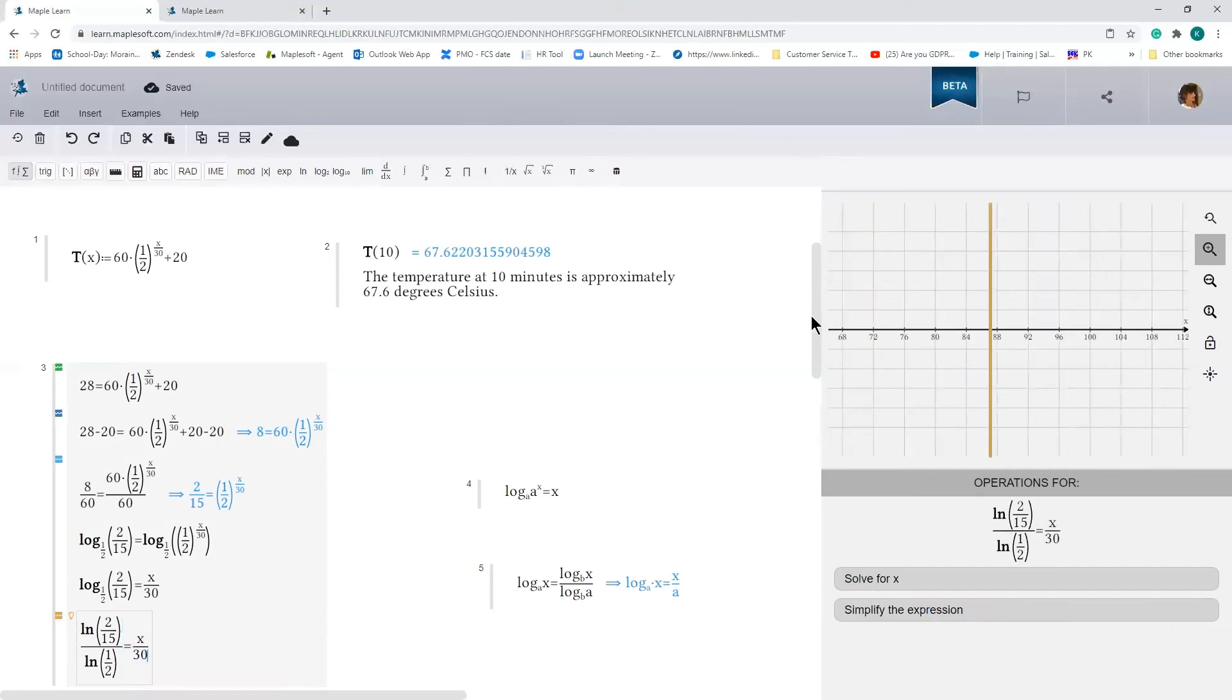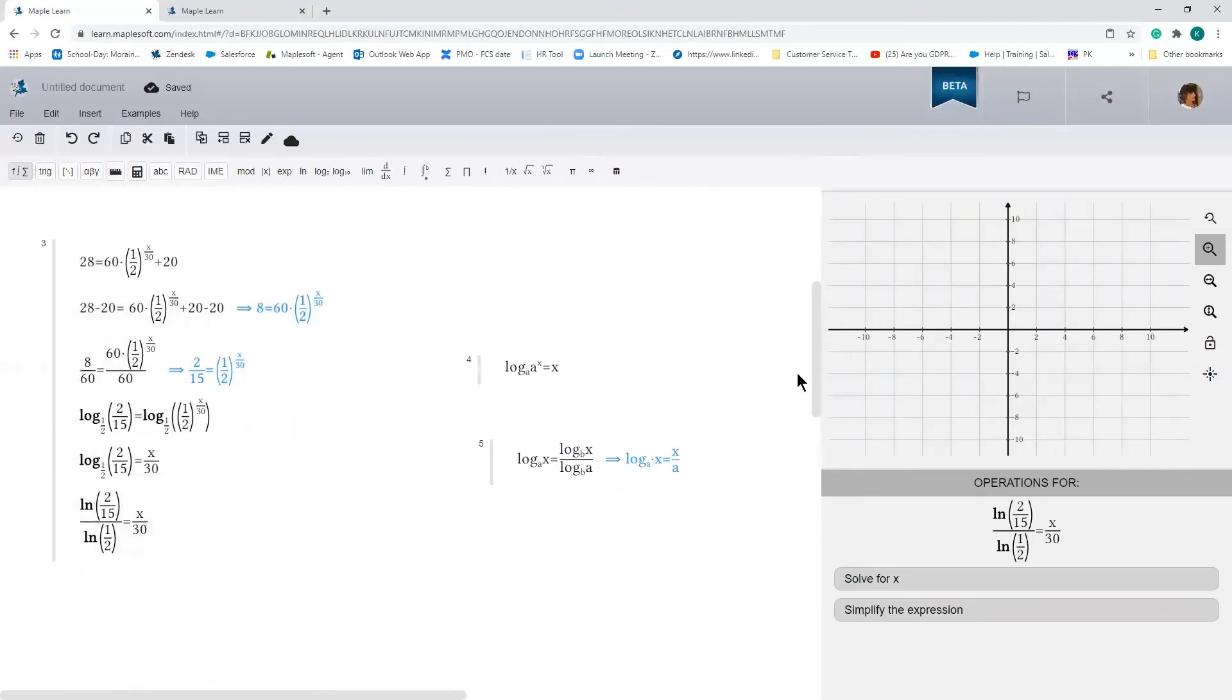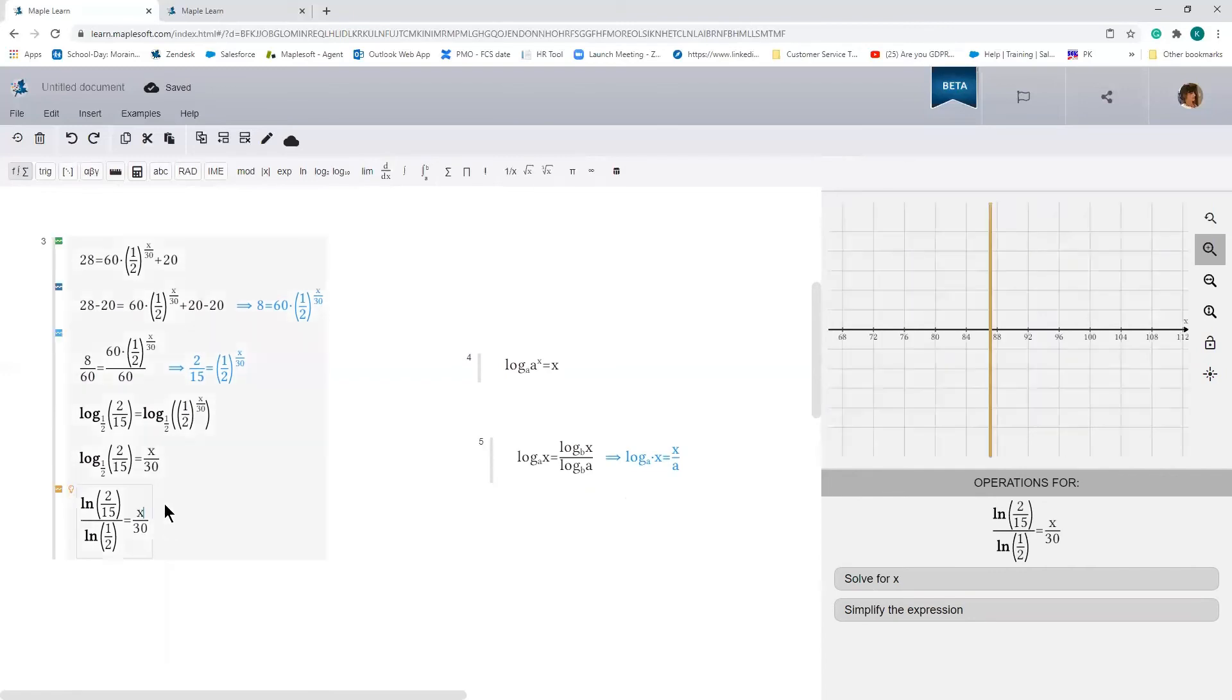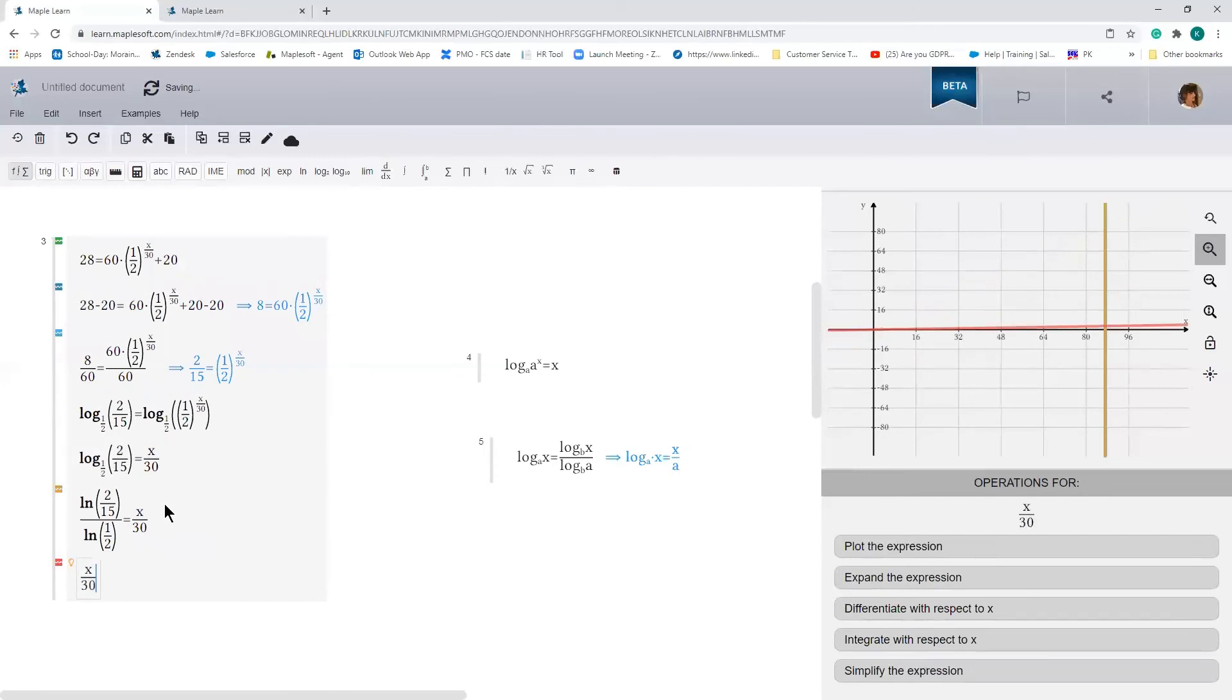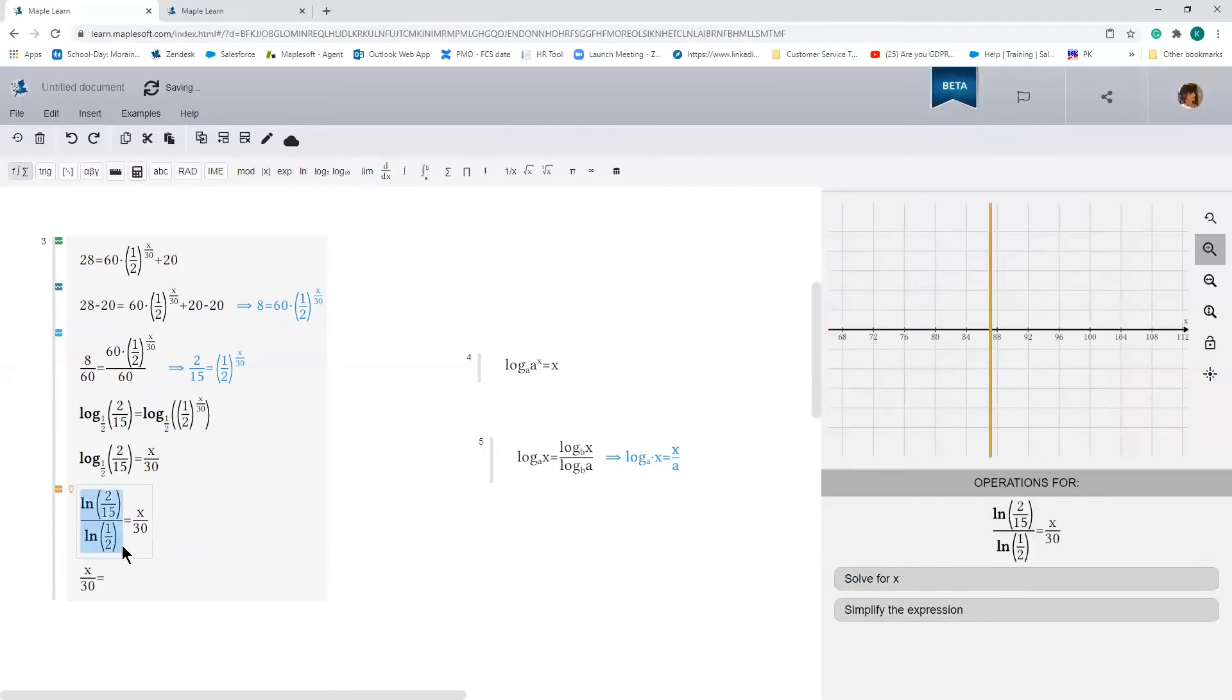And then the next step here is to rearrange this equation so that the x term is on the left hand side and to solve for x. This will be x over 30 equals, to make life easier by just copying this.